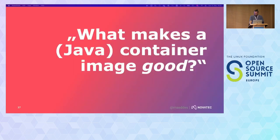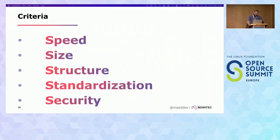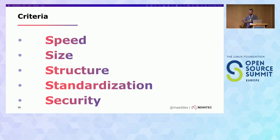To sum up what we've learned from the evolution of Dockerfiles — what makes a container image good? You can see there is speed (how fast can you build it), size (how big is it in the end — smaller is better because you need less storage), structure in the file, degree of standardization, and security.